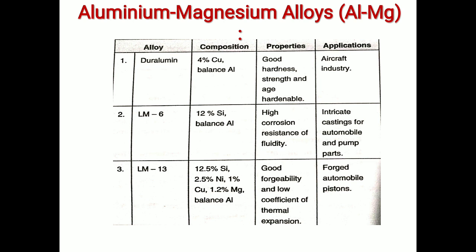LM13 has the composition of 12.5% silicon, 2.5% nickel, 1% copper, 1.2% magnesium, and balanced aluminium. Properties of LM13 are good forgeability and low coefficient of thermal expansion. It is used in the automobile industry for manufacturing of pistons.